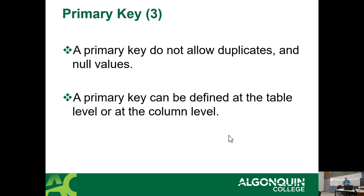A primary key does not allow duplicates or null values. You cannot have duplicate values in a primary key — you'll never be able to find a specific row if it's in there twice. And you can never have a null value because the absence of value cannot be found either. A primary key when creating a table can be defined at the table level or at the column level.